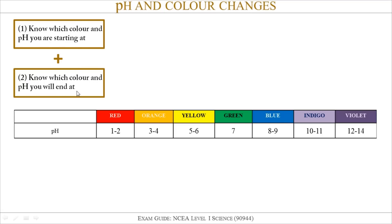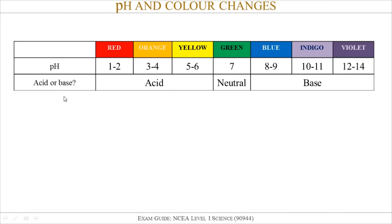Two things I need to do to answer this question: number one, figure out where on the pH scale I'm starting; number two, figure out where I'm going to finish. To recap: anything with a pH less than 7 is acidic, anything at pH 7 is neutral, and anything above that is basic. If you forget the colors of universal indicator, they're just the colors of the rainbow — ROYGBIV.